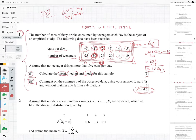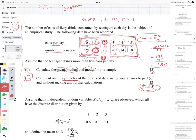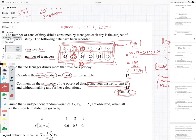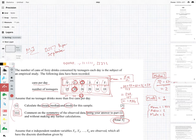We need this information now for part 2, which says comment on the symmetry, and this is why you need to learn a little bit of the jargon. Comment on the symmetry of the observed data using your answers to part 1. That's very important that you're using your answers to part 1, and without making any further calculations. Because if you had to draw this out, you would get a little bit of a curve like that. You can see 25, 30, 26, 20, 14, 10, and that's kind of the shape that you're getting.